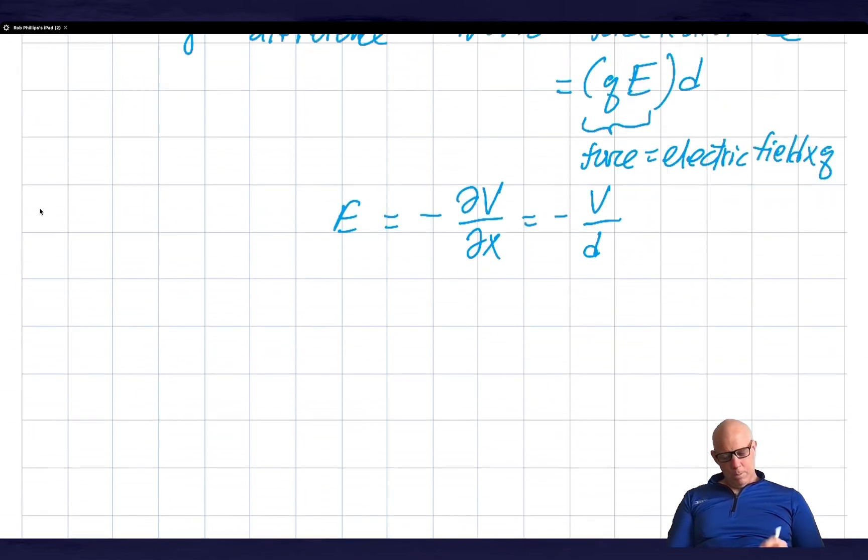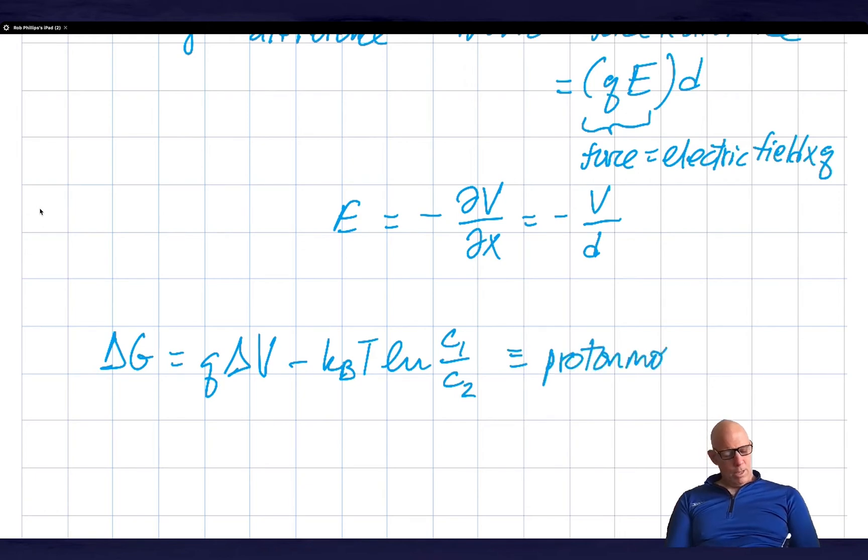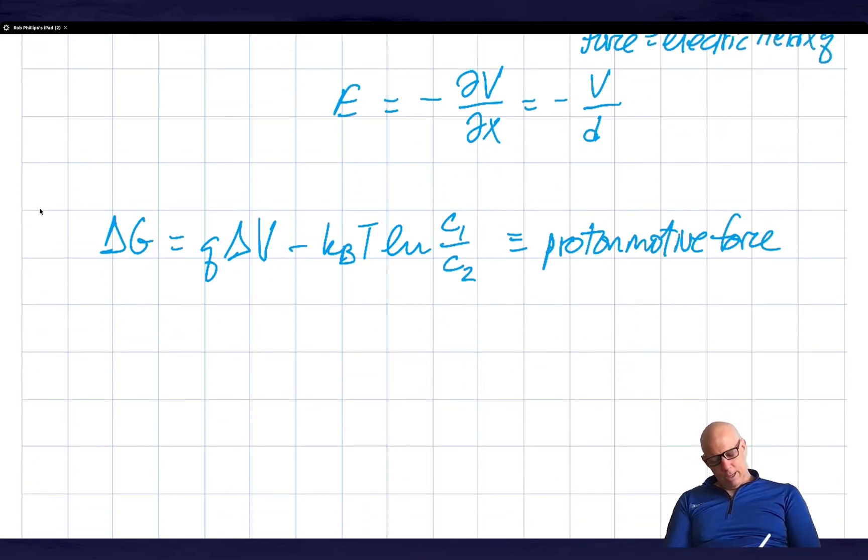So what came out of all this is that I have delta G equal to Q delta V and then minus KBT log of C1 over C2, and this is what I will refer to as the proton motive force. We can take it a little bit farther by noting that C1 is equal to 10 to the minus pH1 and C2 is 10 to the minus pH2. Just a reminder on the definition of pH.